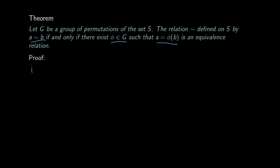To prove that this is an equivalence relation, we first need to show that the relation is reflexive. Let us start with an element a in S. Notice that the identity element of G takes a to itself, which means that a is related to a, and hence the relation is reflexive.